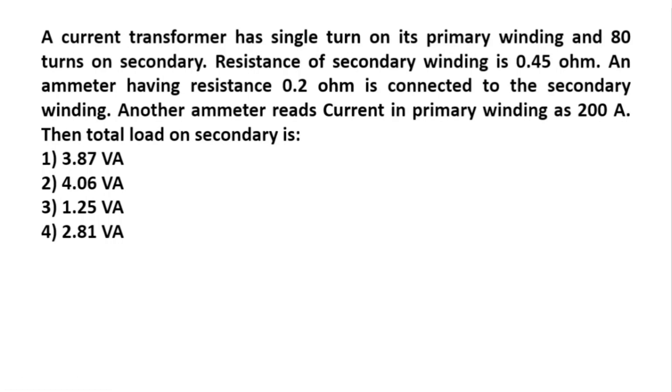A current transformer has single turn on its primary winding and 80 turns on secondary. Resistance of secondary winding is 0.45 ohm. An ammeter having resistance 0.2 ohm is connected to the secondary winding. Another ammeter reads current in the primary winding as 200 ampere.